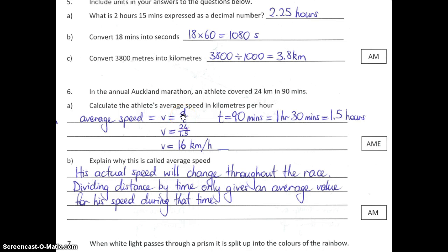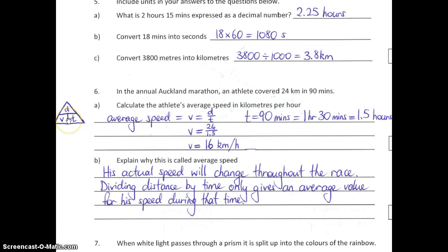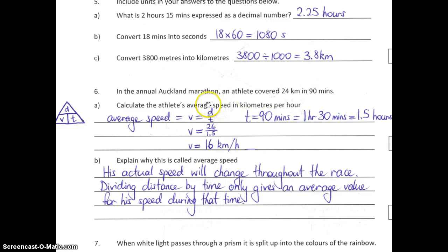The starting point is to use the formula: velocity equals distance divided by time. You may remember being taught to use a triangle to find the formula. In the triangle, velocity is at the bottom, distance is up top, and time is at the bottom alongside velocity. We've been given distance D and time T, and we're trying to find average speed, or V. If we cover up V, we can see we've got D over T, so velocity equals distance divided by time.